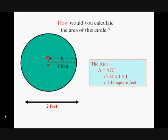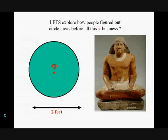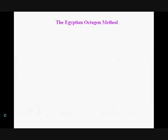Let's explore how people figured out circle areas before all this pi business. The ancient Egyptians had a fascinating method that produces answers remarkably close to the formula using pi.